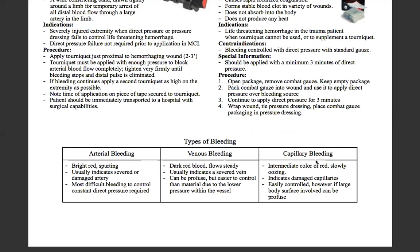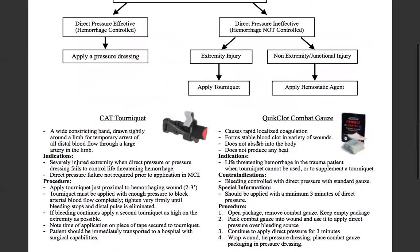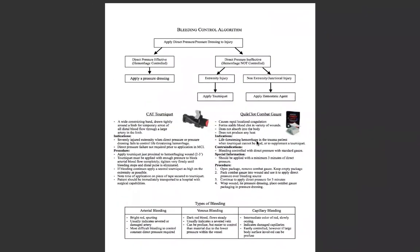Capillary bleeding is an intermediate color of red, slowly oozing, indicating damaged capillaries. It's easily controlled; however, if a large body surface area is involved, it can be profuse. That's a little bit about bleeding control from a bird's eye view.